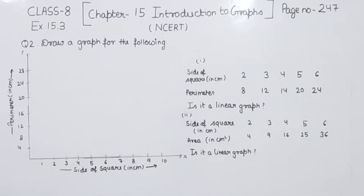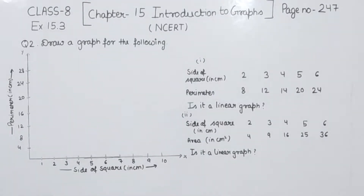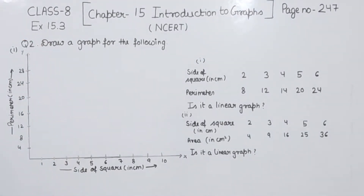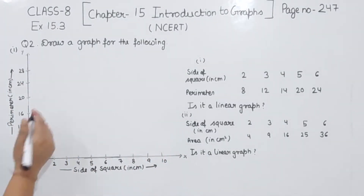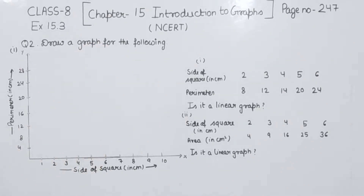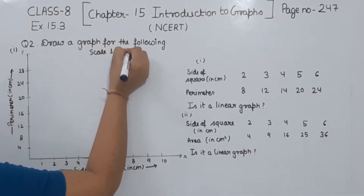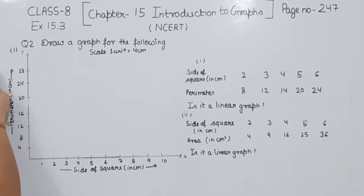We are having two parts in the question. We have to draw the graph and tell whether it is a linear graph or not. We are going to start with part 1. Here we are having the side of the square — we have marked this on the x-axis, and the perimeter we have marked on the y-axis. We have taken the scale as 1 unit equal to 4 cm. We have shown the side of the square on the x-axis and the perimeter on the y-axis.